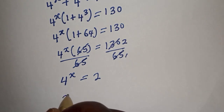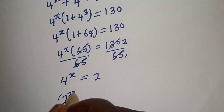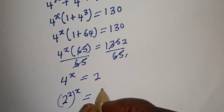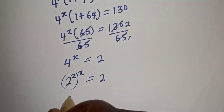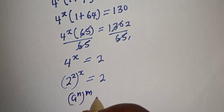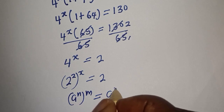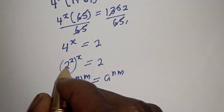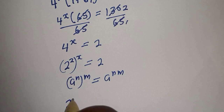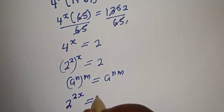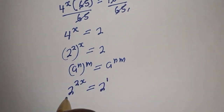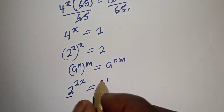4 raised to power s can be written as 2 raised to power 2, all to the power of s, which equals 2. Using the rule that a raised to power n to the power of m equals a raised to power n times m, this becomes 2 raised to power 2s is equal to 2, which is 2 raised to power 1. Since the bases are both 2, we equate the exponents.